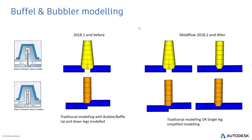We've also updated the way baffles and bubblers are modeled. In version 2018.2 and below, you needed to model baffles and bubblers keeping a distance of about 1 mm between them. With the improvement in later versions, you can represent the same with the help of a single beam and assign the properties of baffle or bubbler. This reduces modeling time for representing baffles and bubblers needed for the cooling channel.